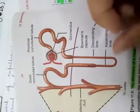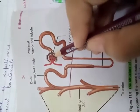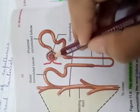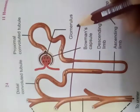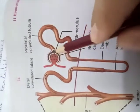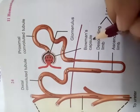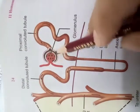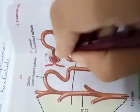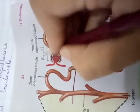The arteries form a network of capillaries with afferent arterioles. This red portion is known as the glomerulus. The glomerulus is covered by a cup-shaped structure known as the Bowman's capsule. The glomerulus covered by the Bowman's capsule together form the renal corpuscle.